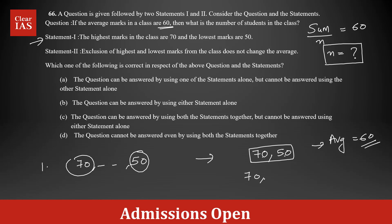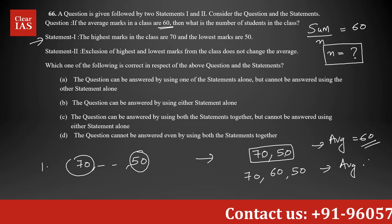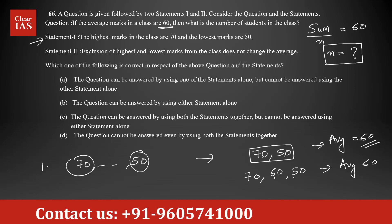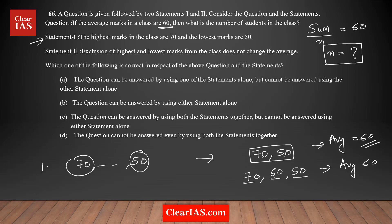Or there could be 1 person in between with 60 marks — that also gives an average of 60: 70 plus 50 plus 60 is 180 divided by 3 is 60. The idea is that some marks are less than 60 and some are more, and they balance each other out to maintain an average of 60. There are infinite possibilities in the middle as long as the average stays at 60.